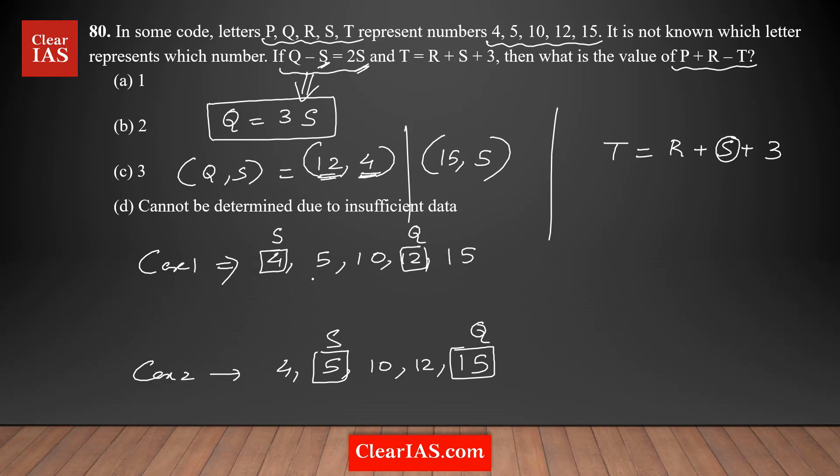So in case 1, there are 3 numbers left and 3 letters left: P, R, and T. These are the 3 letters left and there are 3 values left as well. I'm going to plug in these values. So T is equal to R plus, instead of S, I'm substituting 4. 4 plus 3, which is equal to T is equal to R plus 7.